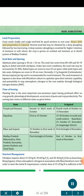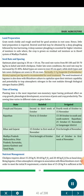Land preparation: Gram needs a cloddy and rough seedbed for good aeration in root zone; hence little land preparation is required. Desired seedbed may be obtained by a deep plowing followed by two harrowings. A deep summer plowing is essential for higher retention of moisture where the crop is grown on residual soil moisture as in the Haveli system of Madhya Pradesh. Seed rate and spacing: Optimum plant spacing is 30 cm × 10 cm. The seed rate varies from 80-100 to 70 kg/ha in Kabuli and Desi chickpeas. Under late sown conditions, seed rate may be increased by 25-40%. Kabuli types are sown in rows 45 cm apart, while Desi types and late sown chickpeas are sown in 30 cm rows. Normally, 2-3 g fungicide (Carbendazim, Thiram, Captan) per kg seed is recommended for seed treatment. Seed treatment with Rhizobium culture capitalizes on biological nitrogen fixation (BNF) through root nodules.